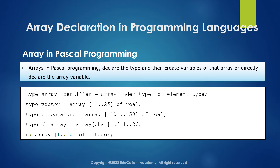There are six programming languages. There are two or three types of array types to consider.